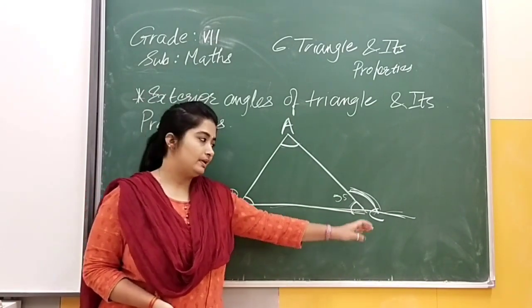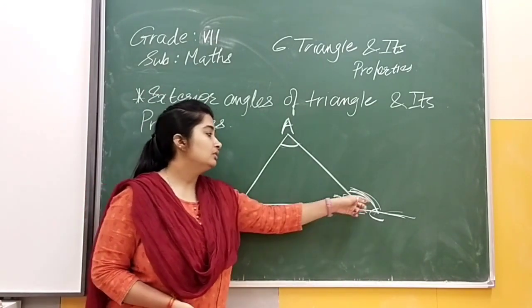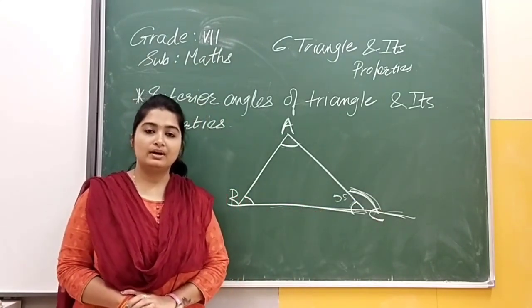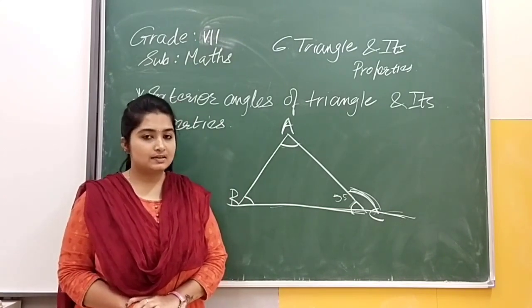They are on the same line, right? So they will be linear pair. If this is 55, then that will be 180 minus 55. Linear pair concept we have already discussed in lines and angles.